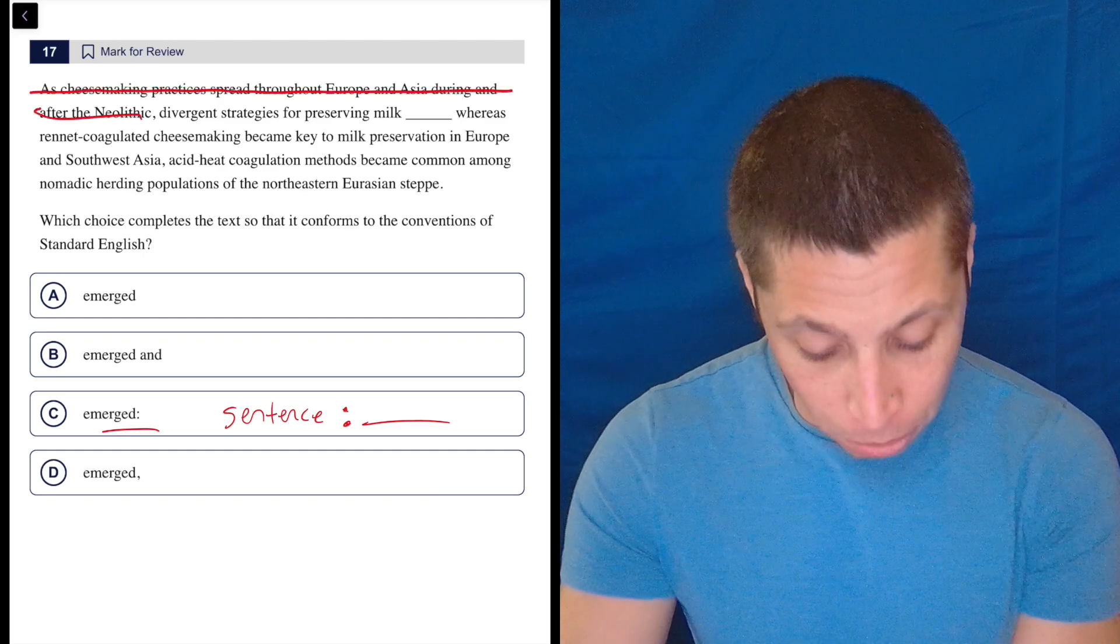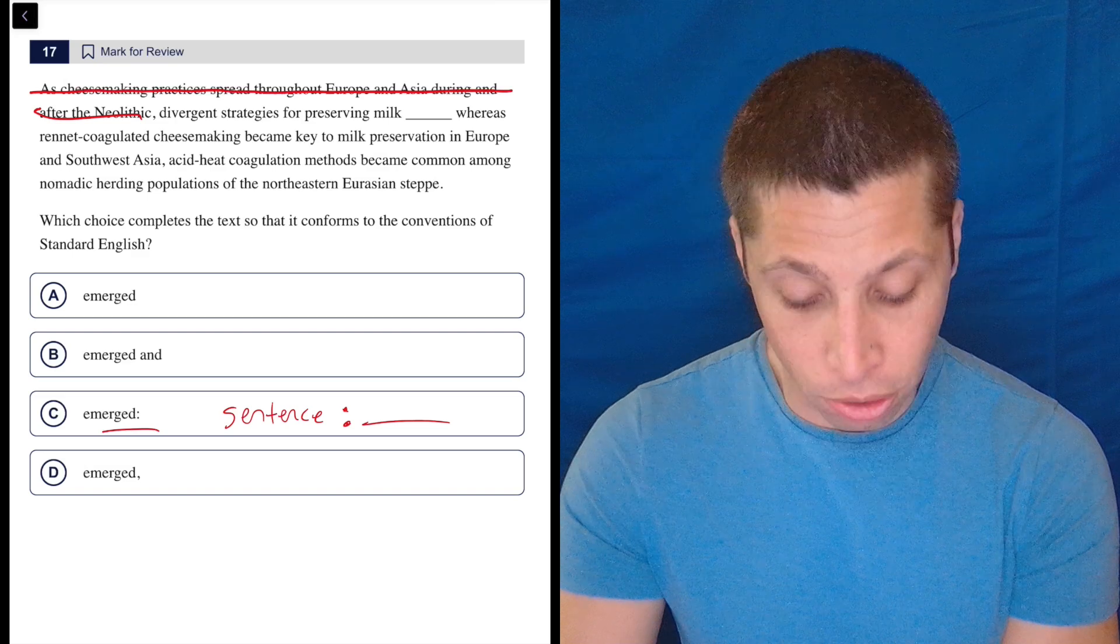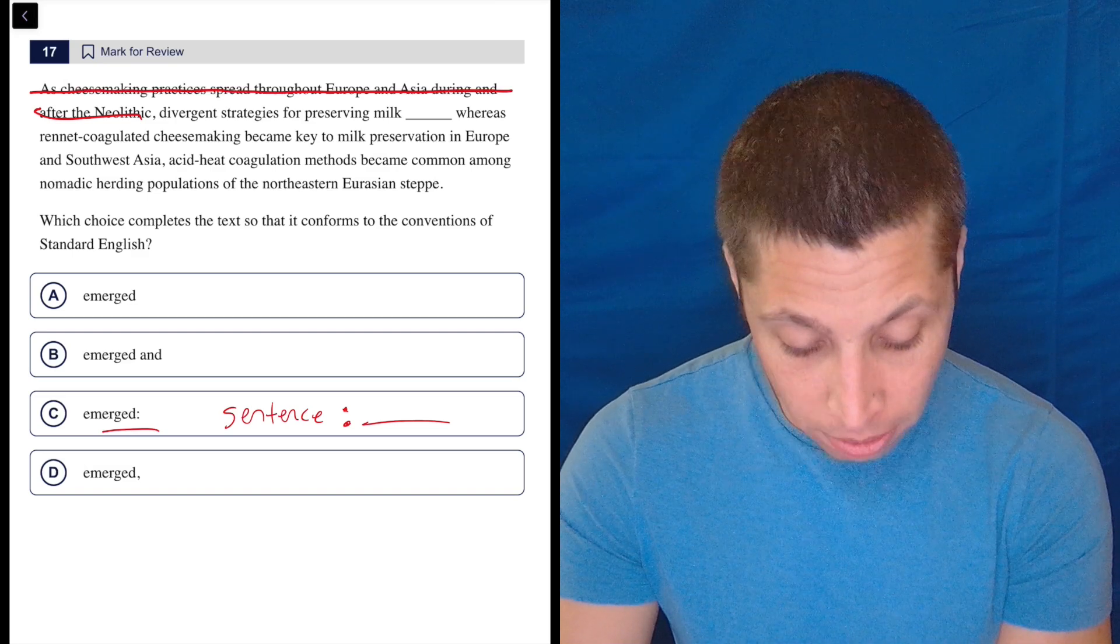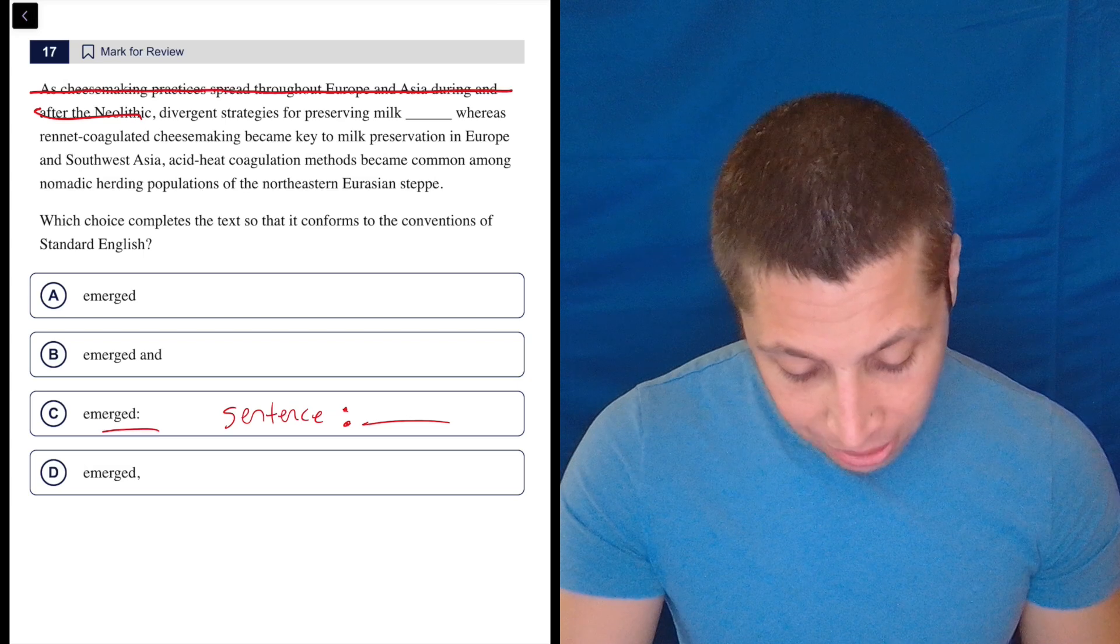Divergent strategies for preserving milk emerged. That's a sentence. Divergent strategies for preserving milk emerged. Okay, so that checks off.